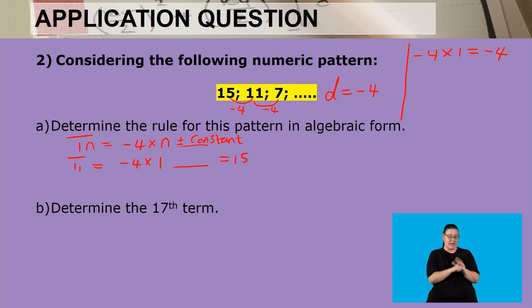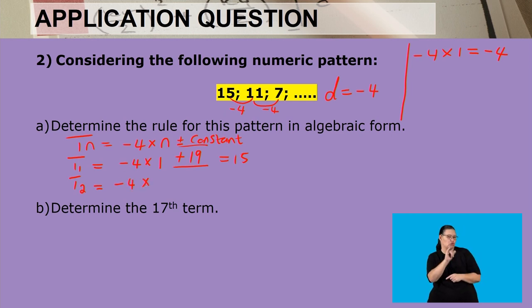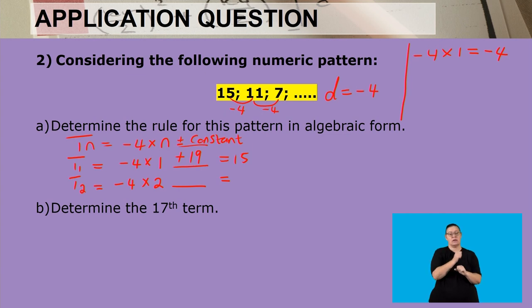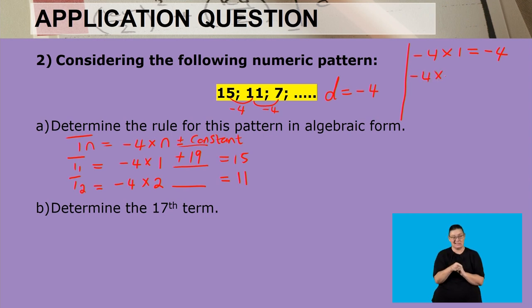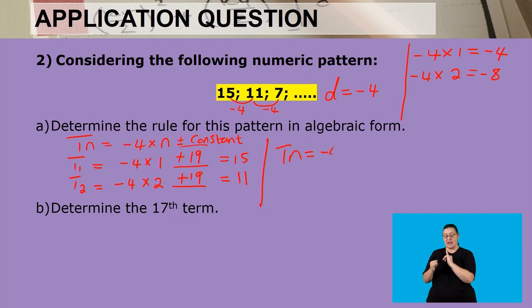Negative 4 multiplied by 1 gives us negative 4, and to get from negative 4 to 15 we add 19. Let's check using the second term: negative 4 multiplied by 2 should give us 11 after adding or subtracting our constant. Negative 4 times 2 is negative 8, and from negative 8 to positive 11 we again add 19. So our constant value is 19.